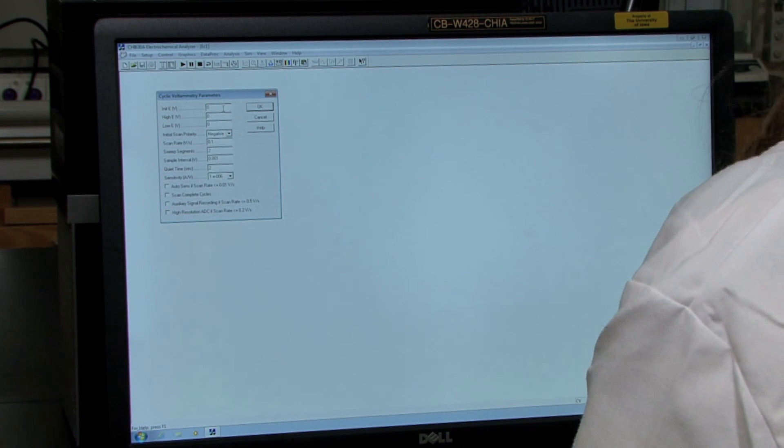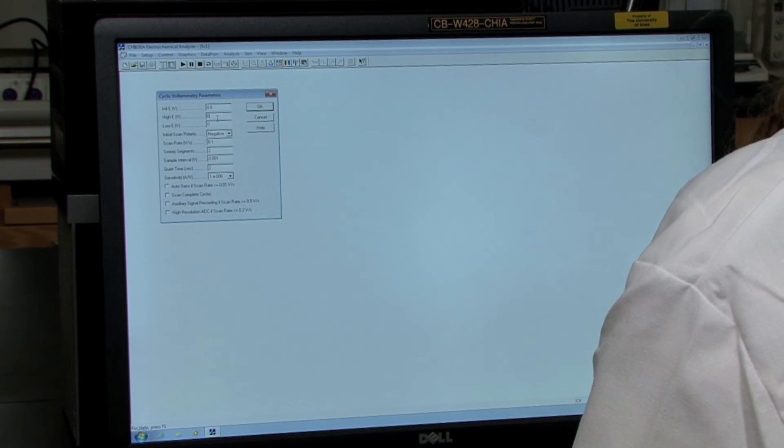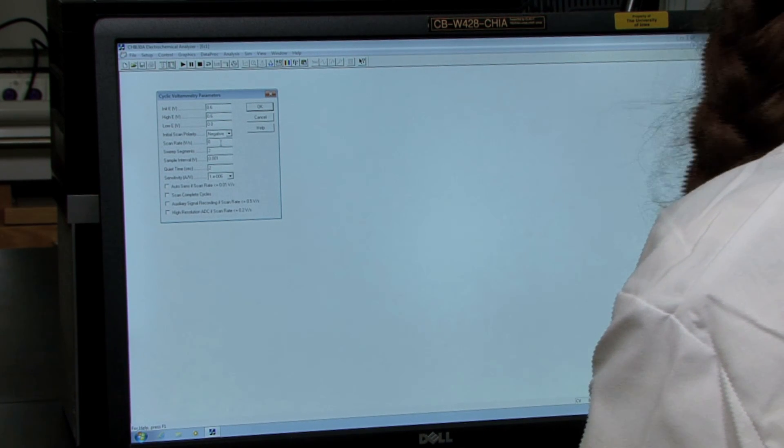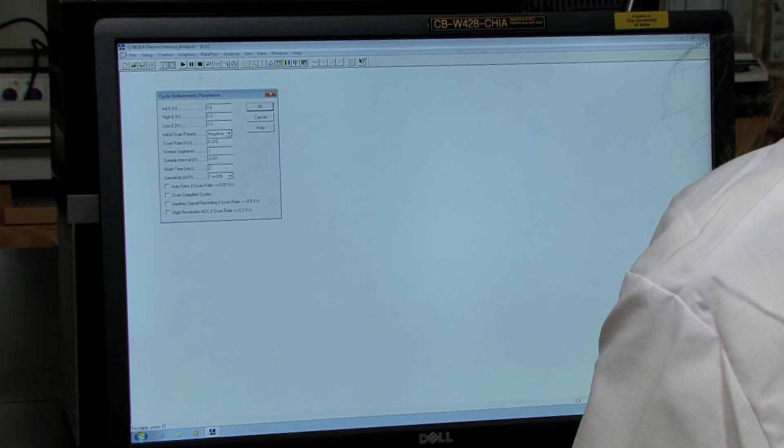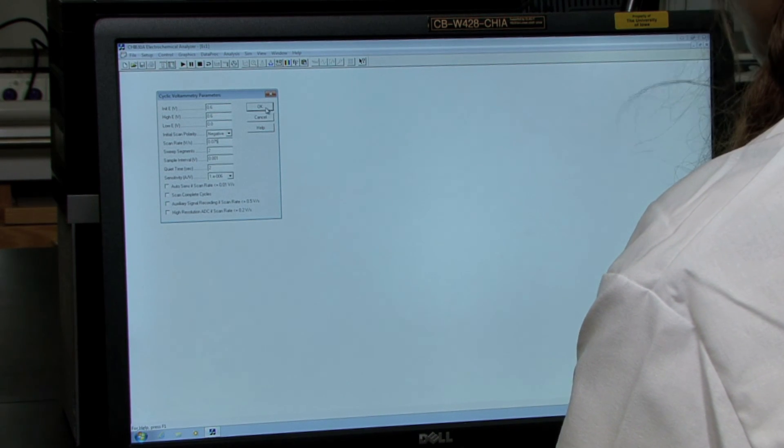The initial voltage you'll be using is 0.6 volts, and your high voltage is the same, 0.6. Low voltage is 0. We're scanning in the negative direction. The scan rate we'll be using is 75 millivolts. You can leave the rest of the parameters set at default for now. If you encounter any problems or your CV isn't turning out right, you can get a TA and they can show you how to adjust these parameters. When you've set the parameters, hit OK.